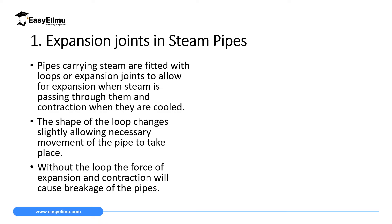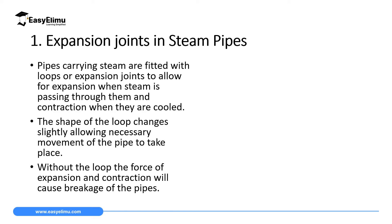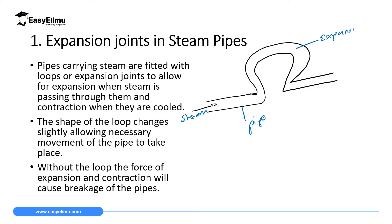One of the applications of expansion and contraction in solids is in the fixing of expansion joints in steam pipes. Whenever we are fixing a steam pipe, every short distance covered by this pipe, we will have an expansion joint. This is the steam passing through the pipe, and this is what we call the expansion joint.